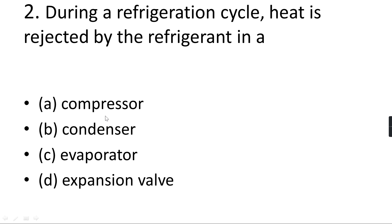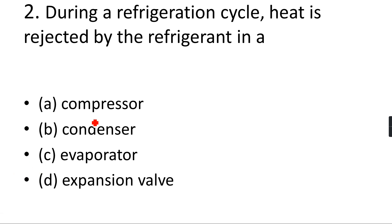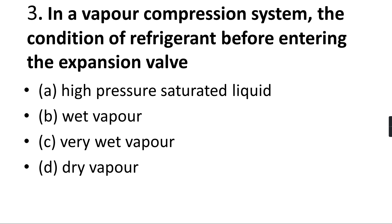The options are: compressor, condenser, evaporator, and expansion valve. The correct answer is condenser. Condenser is basically always used for heat rejection, whether it is a vapor absorption cycle or a vapor compression cycle.